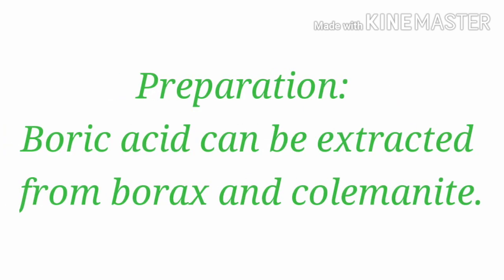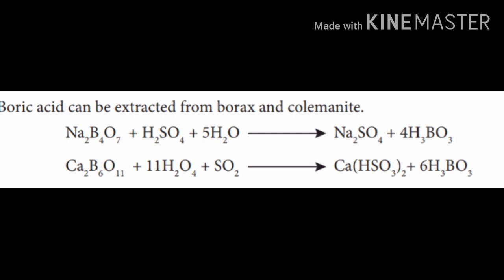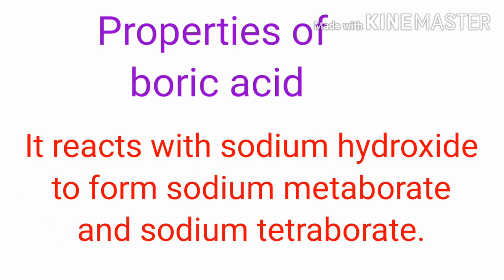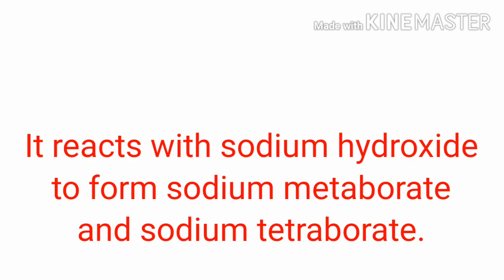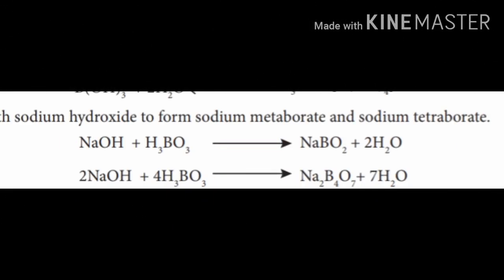Borax is also used as flux in metallurgy, acts as a good preservative, and is used in food preservation. The formula of boric acid is H3BO3. Boric acid can be prepared from borax and colemonite. Reaction: Na2B4O7 plus H2SO4 plus H2O gives Na2SO4 plus H3BO3 (boric acid). Second, colemonite (Ca2B6O11) plus 11H2O plus sulfuric acid gives boric acid. Properties of boric acid: it reacts with sodium hydroxide to form sodium metaborate (NaBO2) plus 2H2O.